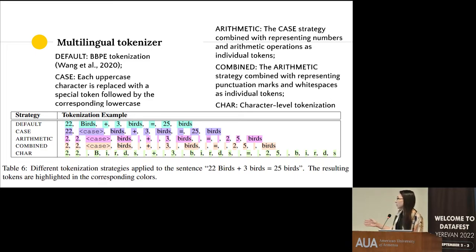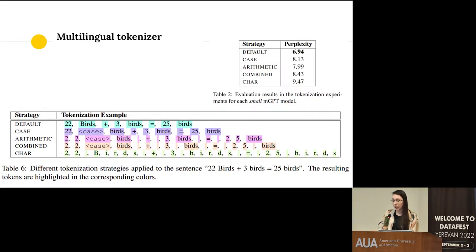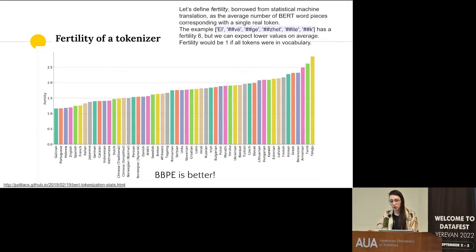We compared classic BPE, character-level, and various combined strategies to find which gives the lowest perplexity overall. Our guess was that the combined strategy should be best — we spent so much time on it. But it turned out the default classic byte-pair encoding strategy gives the lowest perplexity for most languages. That was a surprising outcome.